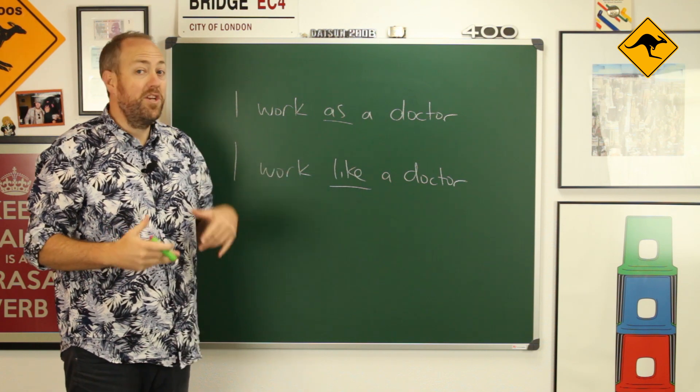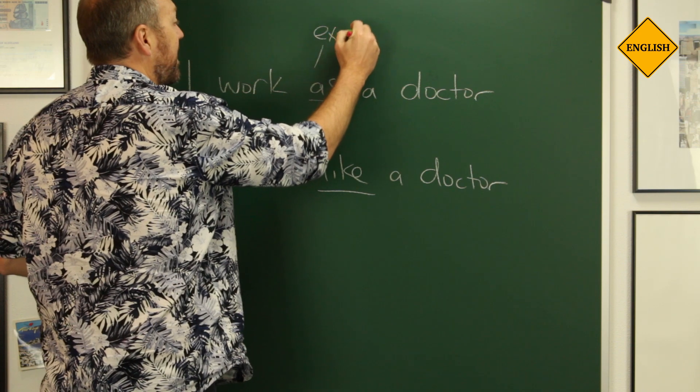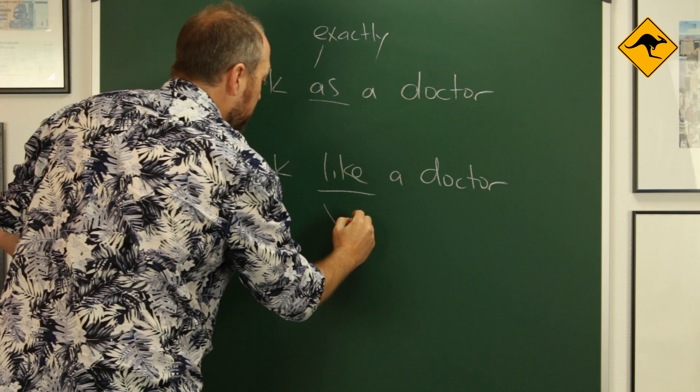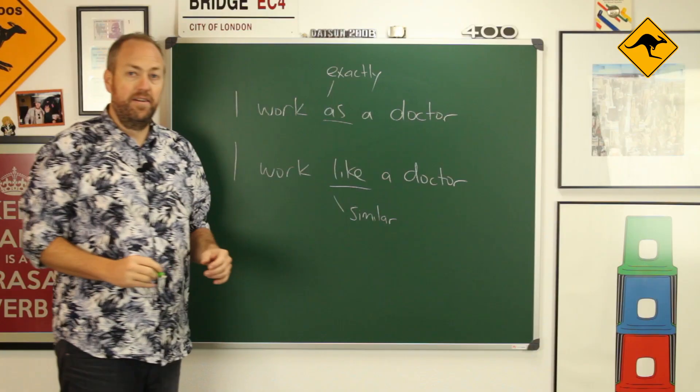Well the difference is when we use as, as means exactly, and when we use like, this is a comparison. So this means similar, a comparison.